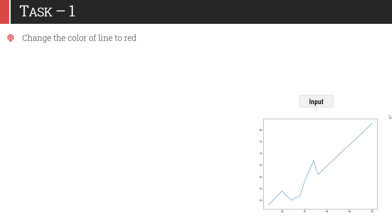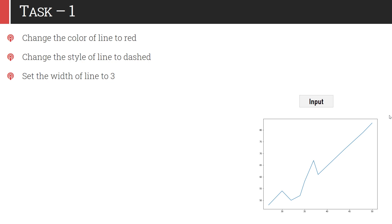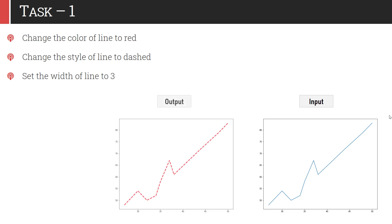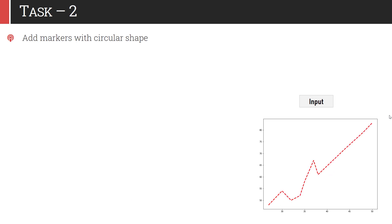Task 1: you have to change the color of the line to red. Next, you have to set the style of the line to dashed — as it is a solid line, it should be converted into dashed. You also have to set the width of the line to 3. Once you apply all these three operations onto this plot, the plot would look like this.